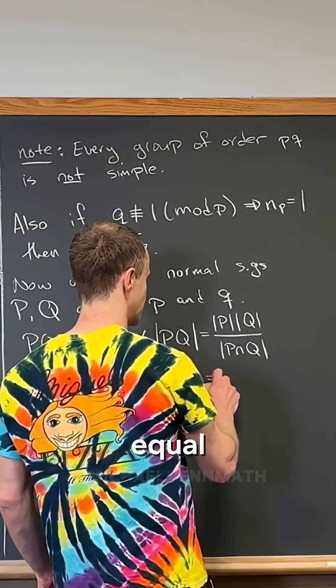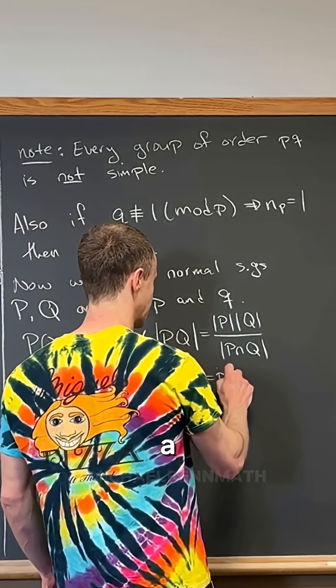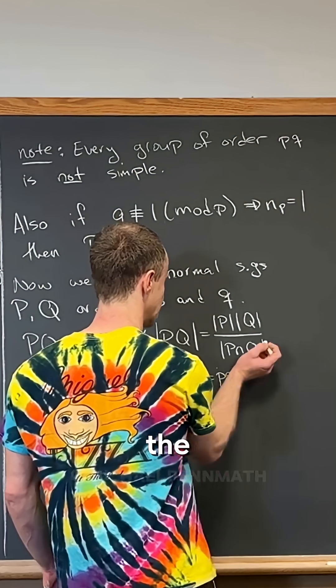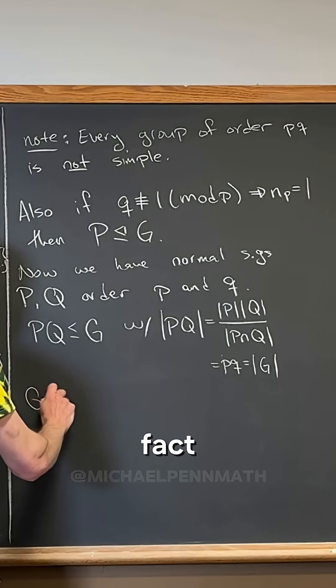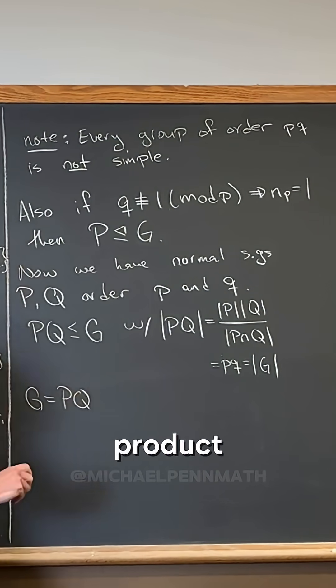Right, so that means that this is equal to little p times little q, which is equal to the entire order of the group. So check it out, we've got G is in fact equal to the internal direct product of PQ.